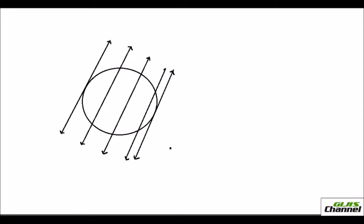Here I have drawn a circle with several parallel lines. When parallel lines are drawn, you can see that on a circle you can have only two tangents — one at each extreme, tangent 1 and tangent 2. All the lines in between are secants: secant 1, secant 2, and secant 3.